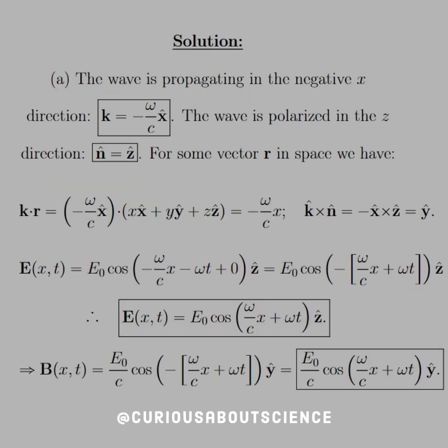Alright, so for part A, the wave is propagating in the negative X direction. Hence, the K vector is equal to negative omega over C, X hat. The wave is polarized in the Z direction, so our N hat is equal to Z hat. And, for some vector R in space, we have K dot R is equal to, well, now take the dot product of the K vector with the R vector, and we see that the only thing that stays standing is the X. So, we have negative omega over C times X.